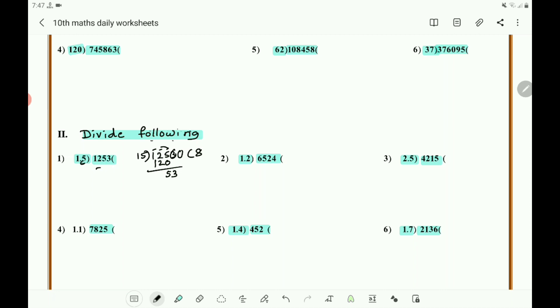Take this 3 below. You know the method you have learned in previous classes. 15 times 3 is 45. What is remaining here? 8. 53 minus 45 is 8. Take 0.